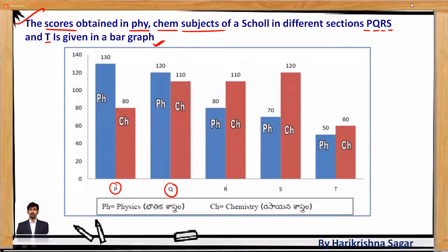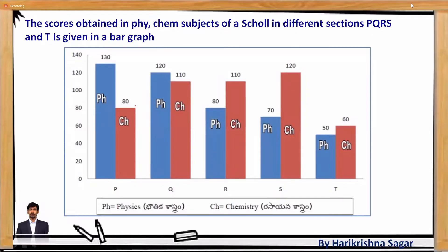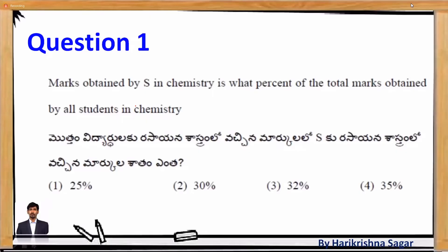Looking at the data: in section P, the score in physics is 130 and in chemistry is 80. In section Q, physics is 120 and chemistry is 110. The highest score visible is 140. All sections' scores are given this way. Now, go directly to the question and connect it to the information in the bar graph.